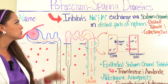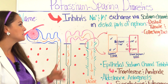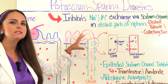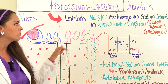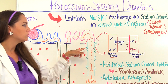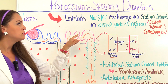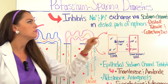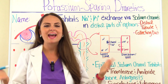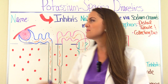Potassium sparing diuretics work to inhibit the sodium and potassium exchange occurring within the cells that make up the distal parts of the nephron — specifically the late parts of the distal tubule and the collecting duct. These medications are going to affect the sodium channels. So to help us understand how these medications are affecting the sodium channels, let's talk about our nephron.